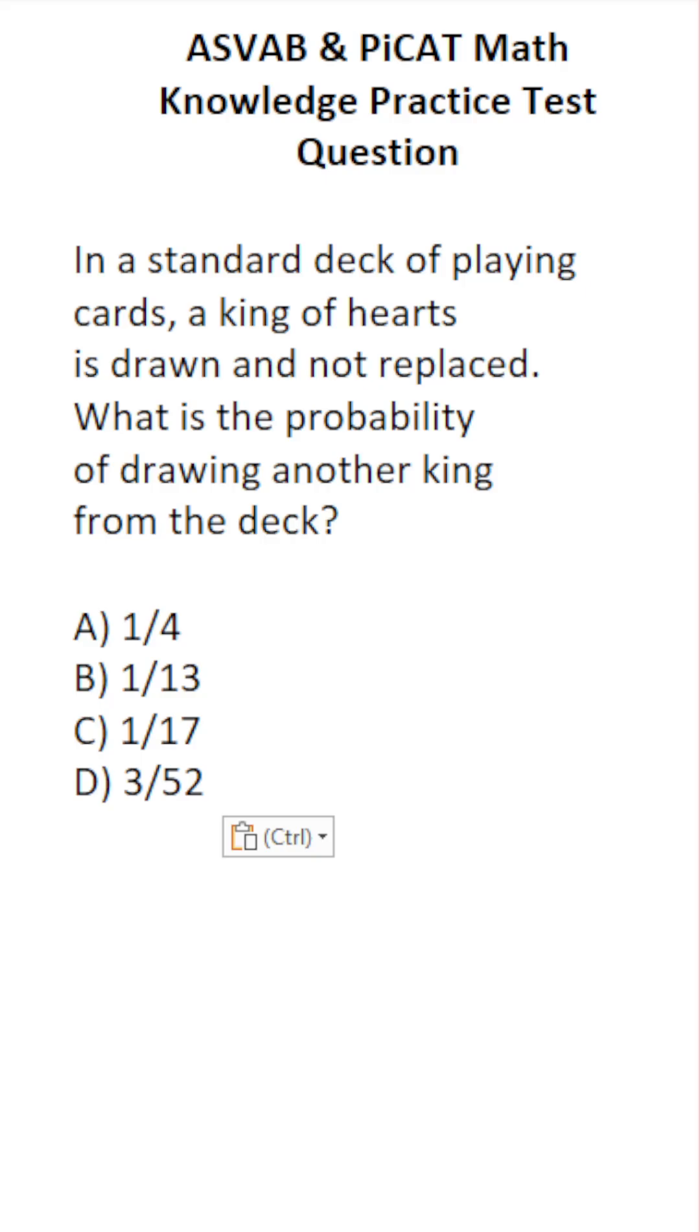So in a standard deck of playing cards, there are four kings and there are 52 cards in total. So according to the problem, a king of hearts is drawn.